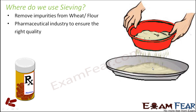Sieving is also used in the pharmaceutical industry to ensure the right quality. During the process of manufacturing medicines, it is very important that impurities are not present, because these medicines are consumed by human beings to treat diseases — and if they contain impurities, they can be deadly for living organisms. So throughout the process of production of medicines, it is always ensured that impurities are removed, and in many places the process of sieving is utilized for this purpose.